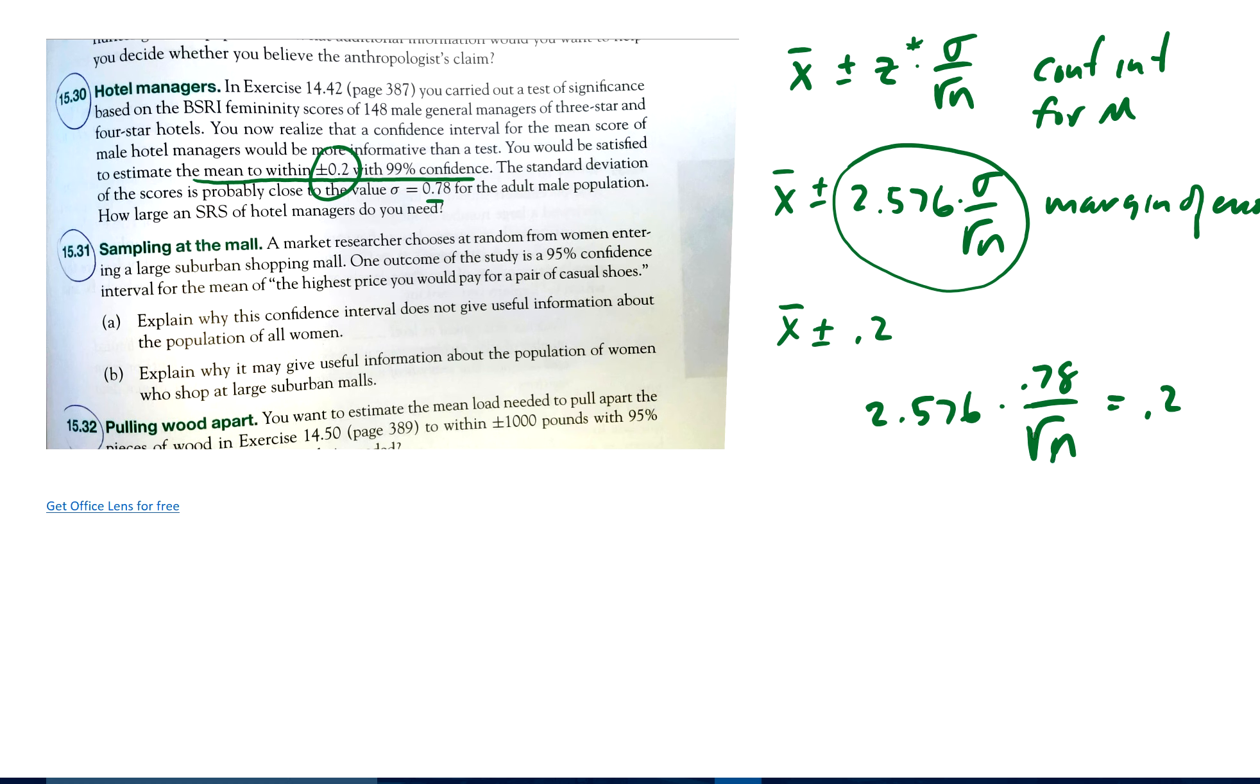So let's solve this for N. So as we did in class, let's divide by 2.576, so we get 0.78 over square root of N equals 0.2 over 2.576.